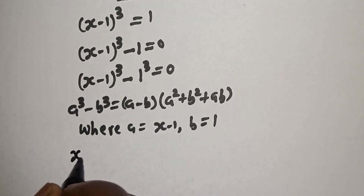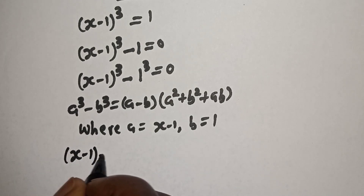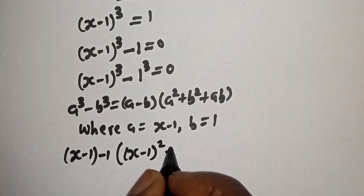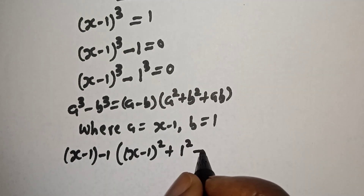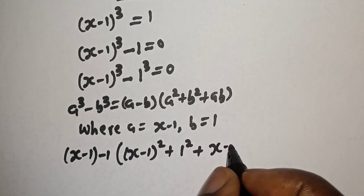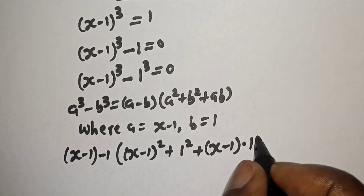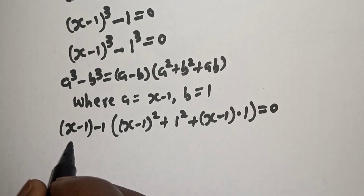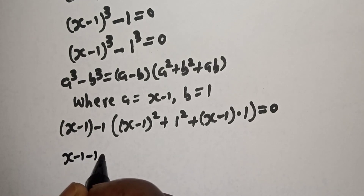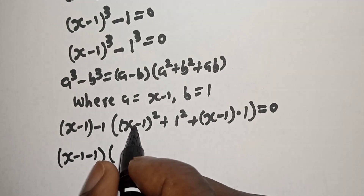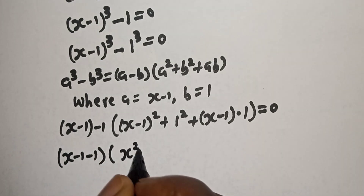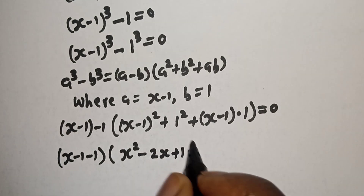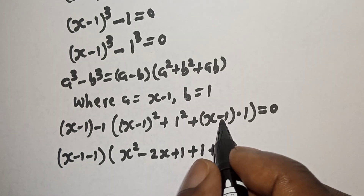This gives us: S minus 1 minus 1, bracket S minus 1 squared plus 1 squared plus S minus 1 multiplied by 1, is equal to 0. Let's open this bracket: S minus 1 squared is S squared minus 2S plus 1, plus 1 squared is 1, plus S minus 1 times 1.